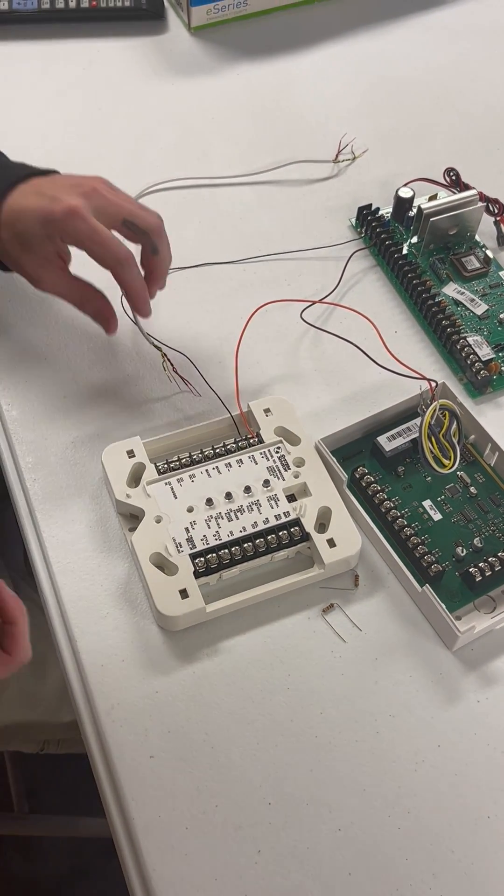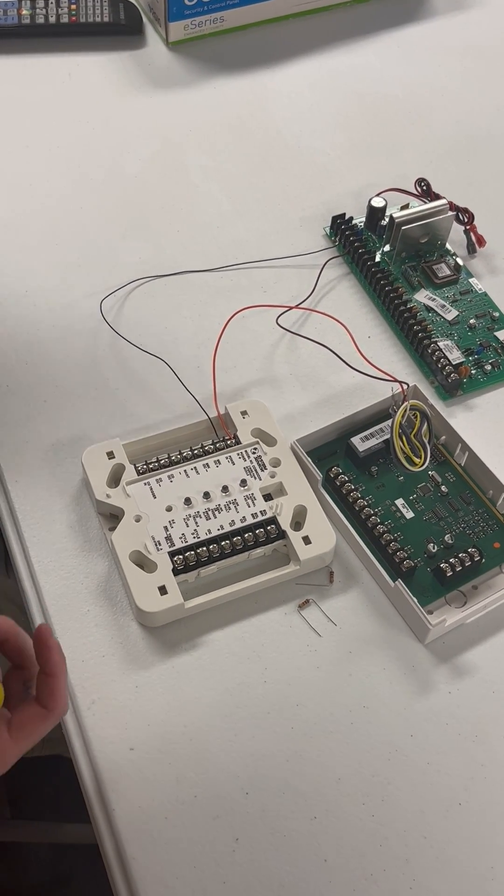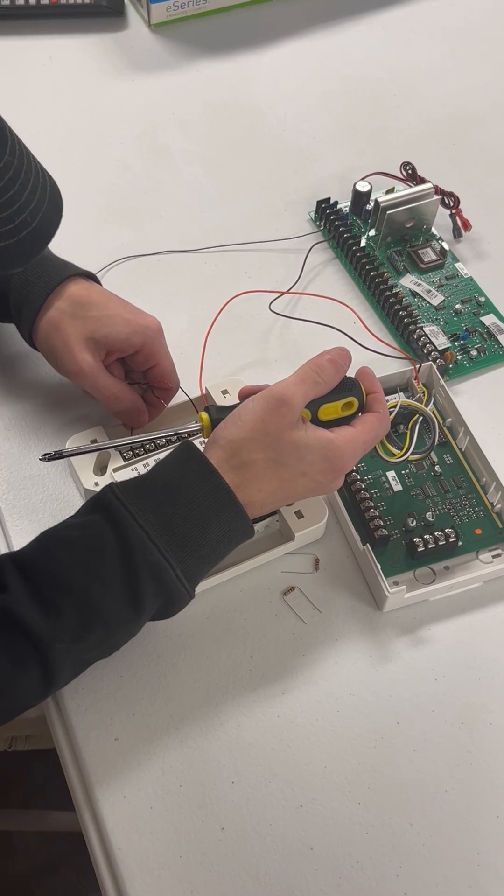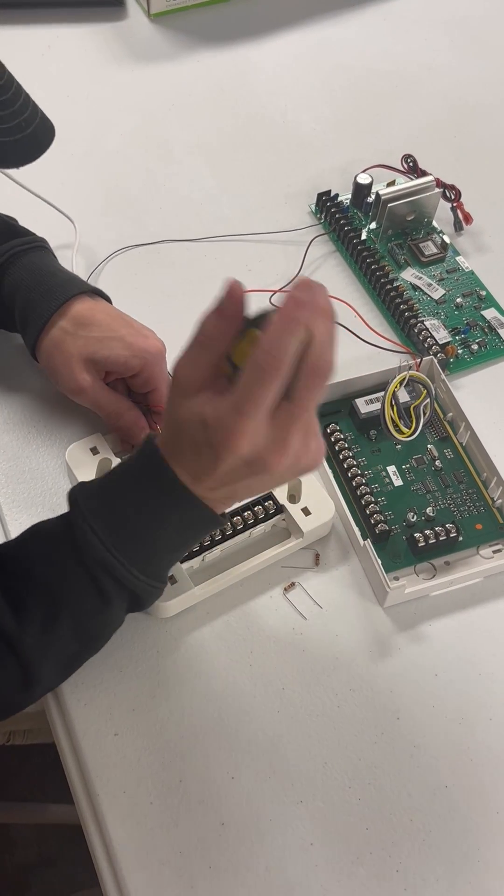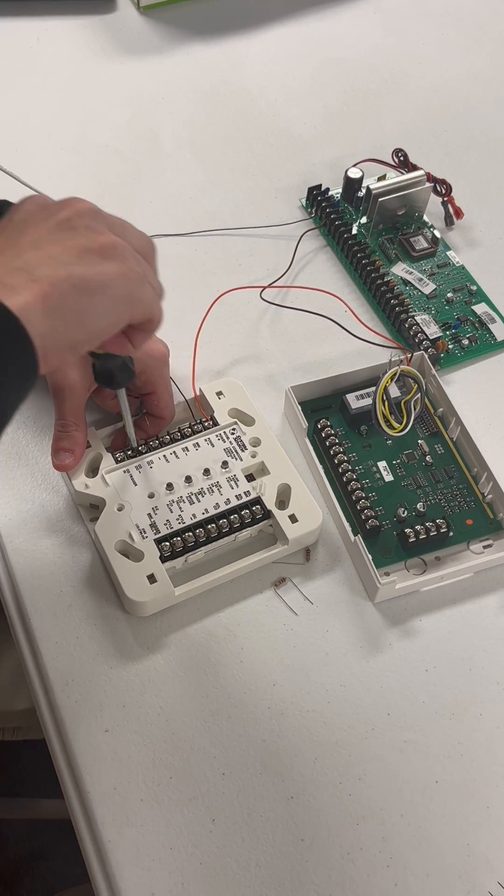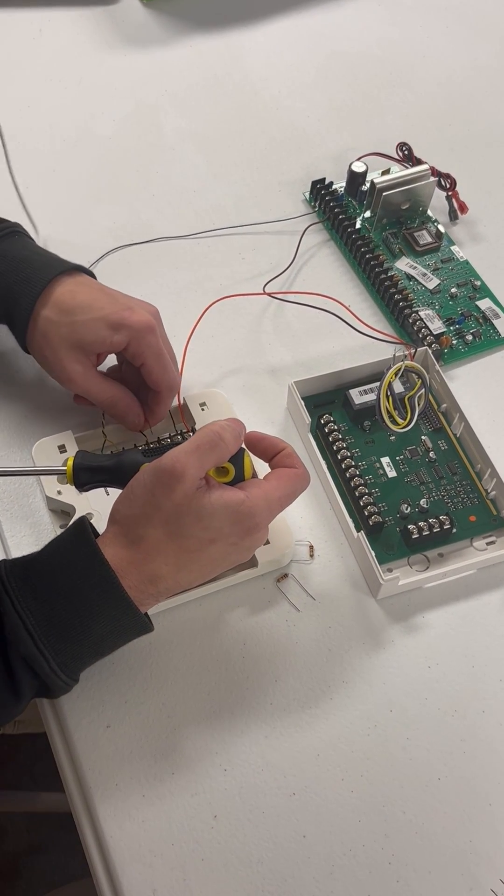The next thing we're going to do is wire up what our zones are going to be. So I typically always take a four conductor like this just because it makes it a little easier. We have positive and negative for our COs and positive and negative for our smokes.